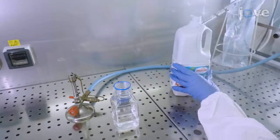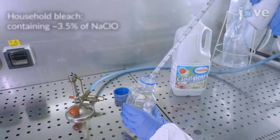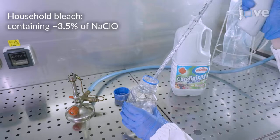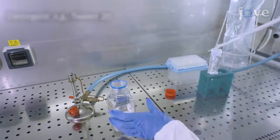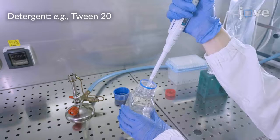Next, prepare a 5% bleach solution by adding 5 ml of household bleach to 95 ml of sterile distilled water. Then, add a few drops of non-ionic detergent to the bleach solution and mix thoroughly.